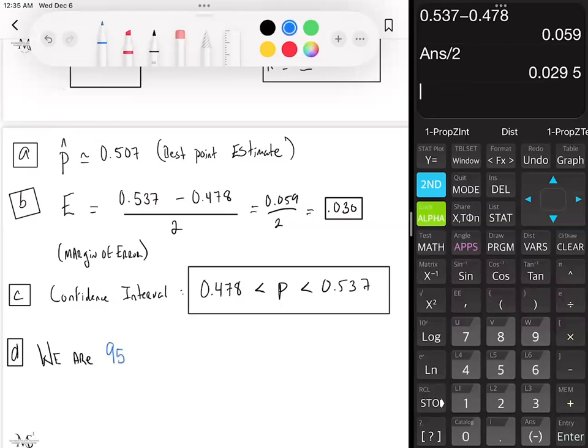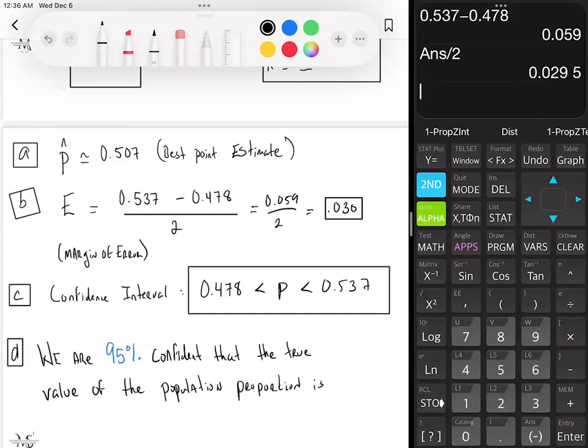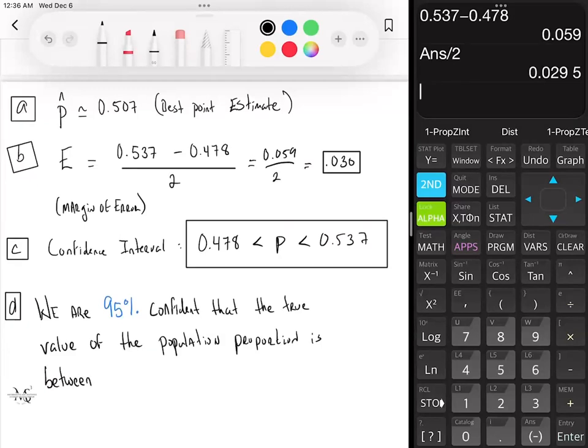We say we are 95% confident that the true value of the population proportion is between the lower bound, which is 0.478, to the value of your upper bound, which is 0.537. The only thing that's going to change in this statement when you have to do the interpretation part, the only thing that's going to change or may change are the value of the confidence level. It could be 90, 95, or 99. And your lower bound and upper bound values.